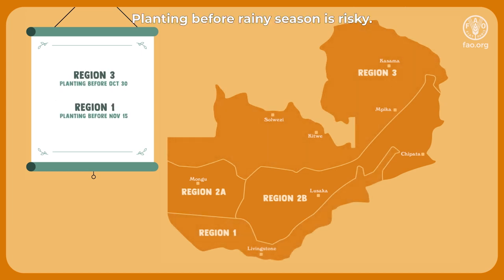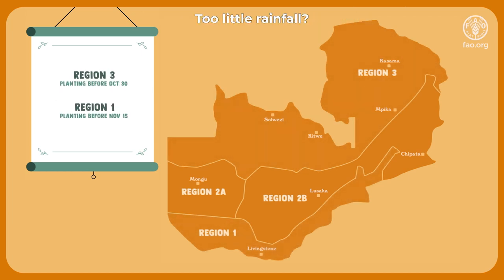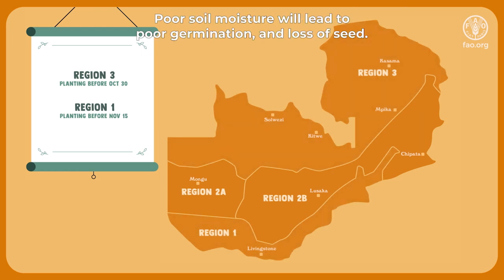Planting before rainy season is risky. Too little rainfall? Poor soil moisture will lead to poor germination and loss of seed.